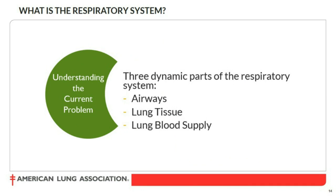There are really three main components to the lungs. First are the airways — these are what we target as physicians and healthcare professionals through medication. Every inhaler you use is intended to help the airways, whether it's bronchodilators to open them up or inhaled corticosteroids to calm the inflammation in asthmatics or patients with chronic bronchitis, helping decrease inflammation exhibited as coughing, sputum, and phlegm.